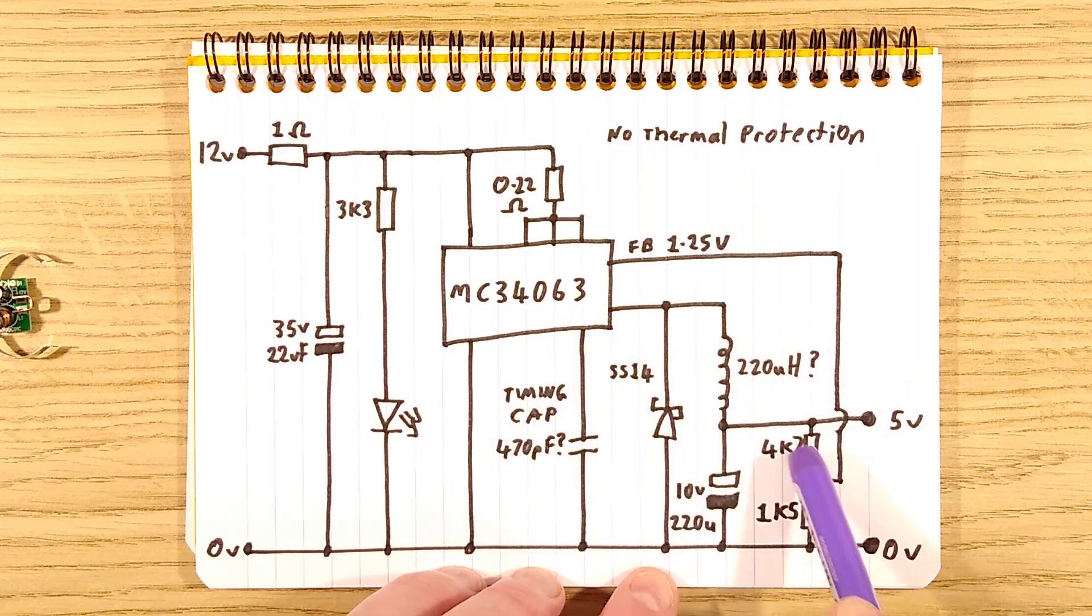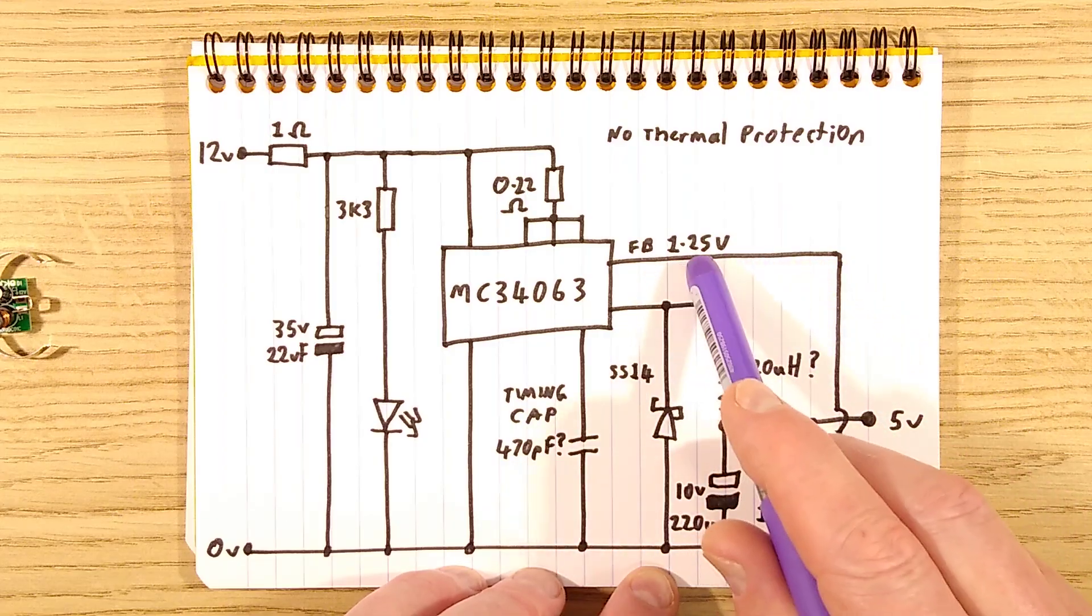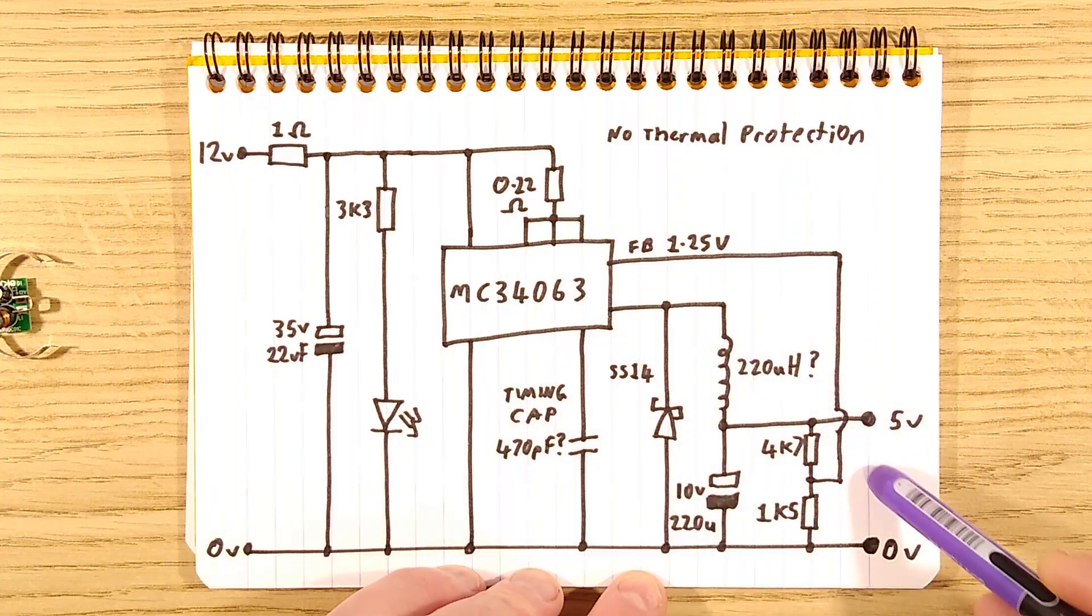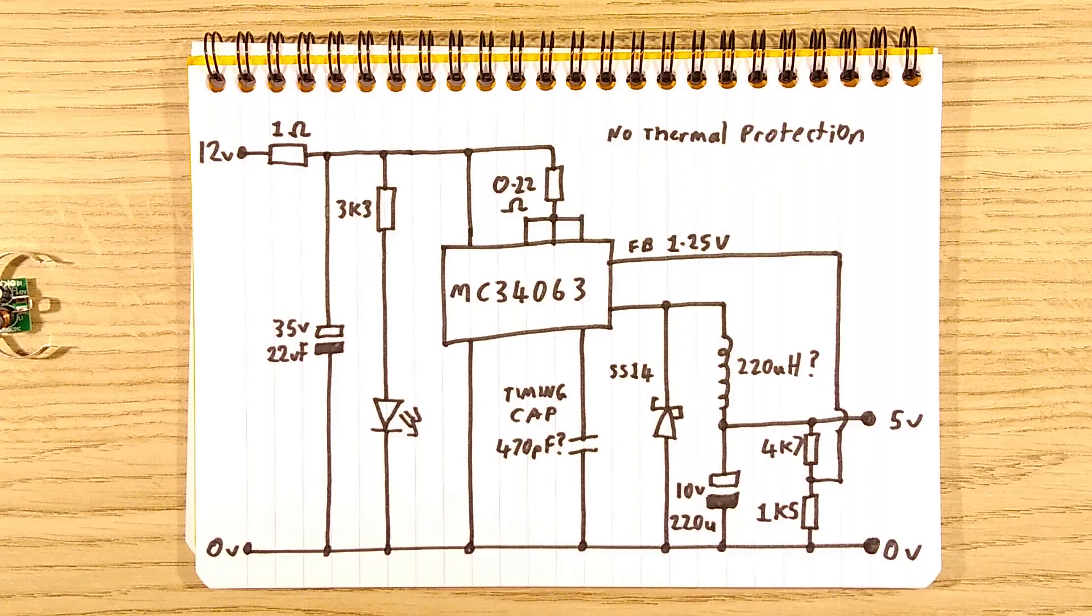Until the voltage at the output reaches a level that this potential divider will provide a feedback voltage of 1.25 volts as a threshold, and at that point it goes into standby until it sees the voltage drop and then it boosts that capacitor up again. And that is it.